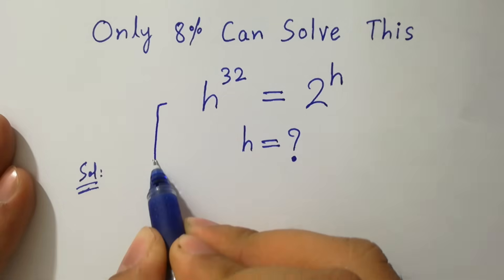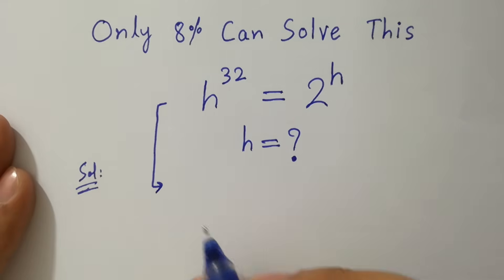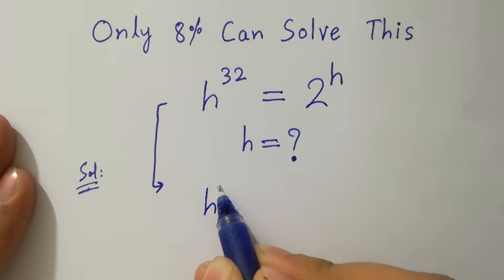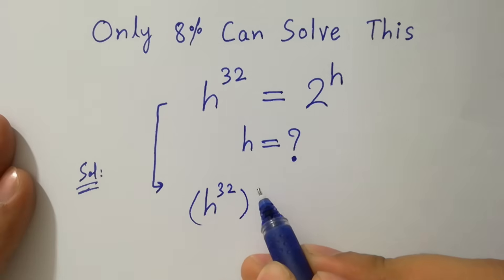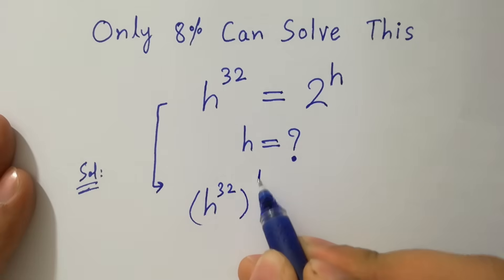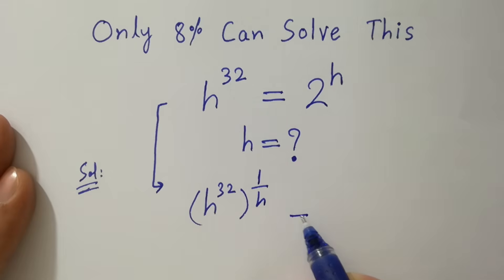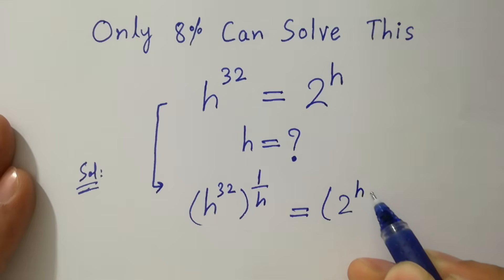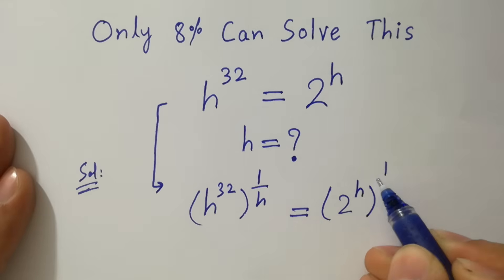To solve this problem, take power 1 over h on both sides: h to the power 32, to the power 1 over h, equals 2 to the power h, to the power 1 over h.